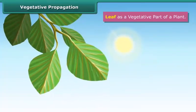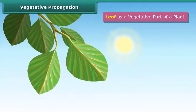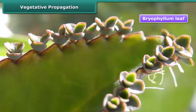Leaf as a vegetative part of a plant. In plants like bryophyllum, the leaf is the vegetative structure that helps in vegetative propagation. Many small buds arising at the margins of the leaves, under suitable conditions, form new plants.